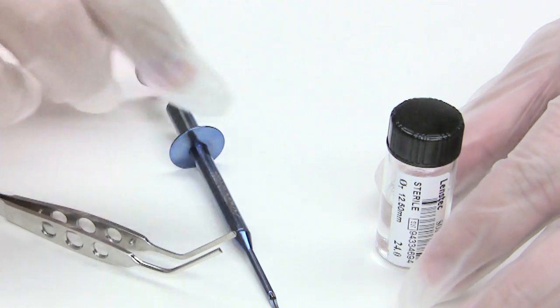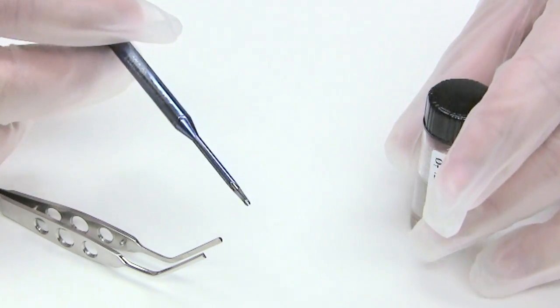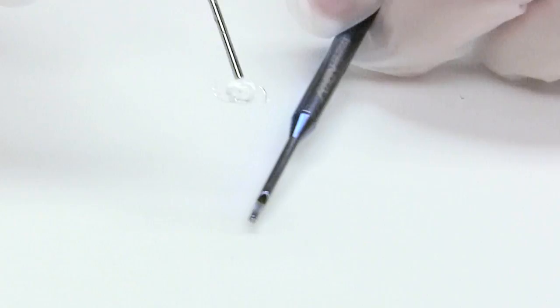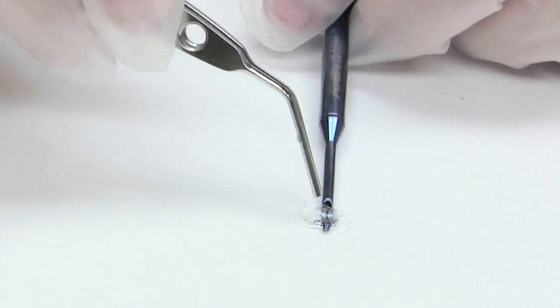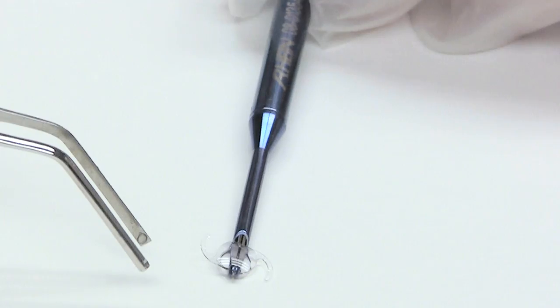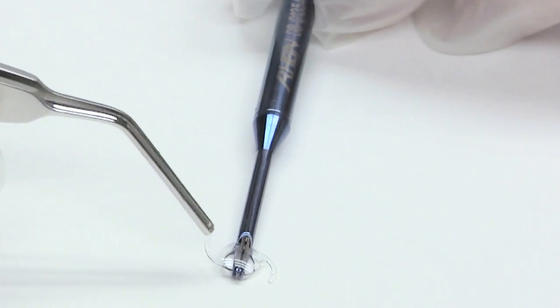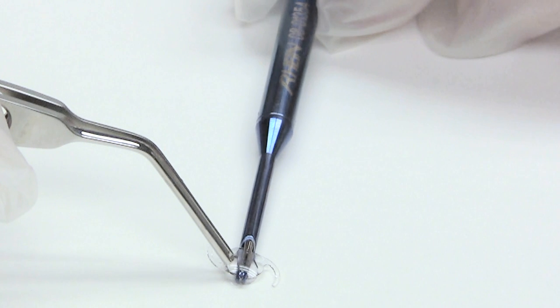To use the instrument, you'll stick it through the main incision, make sure the lens is prolapsed out of the bag, and you'll go back and you'll see there's a slight curve here. You'll go back and capture the back part of the lens.